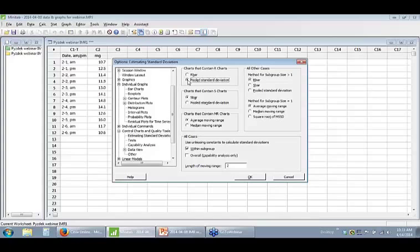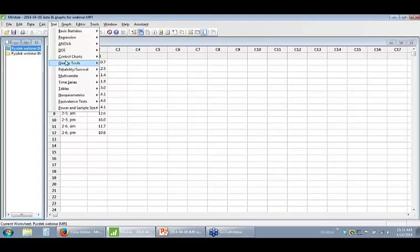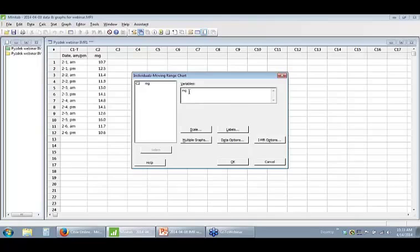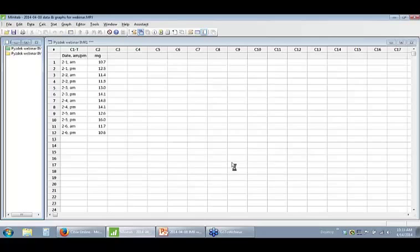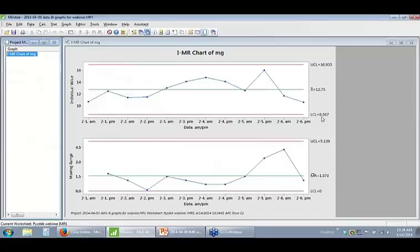You go to tools, options, control charts and quality tools, and estimating standard deviation. And there it is. The default, when you first install Minitab, it'll use the pooled standard deviation to calculate the limits. So change it to R bar and all will be well in the world. So here's our original data set, the 12 points that we used for the manual calculations. To duplicate our results manually, you go under control charts, individuals, IMR. And there they are: 5.13, 8.57, and 16.93. So we're able to duplicate in Minitab exactly what we got manually.